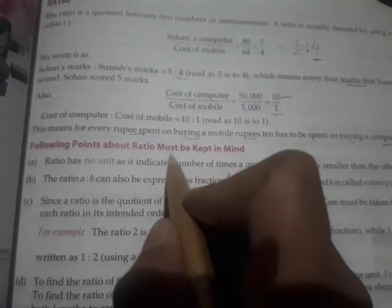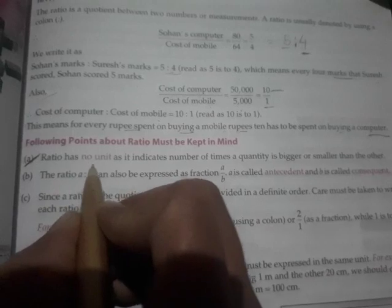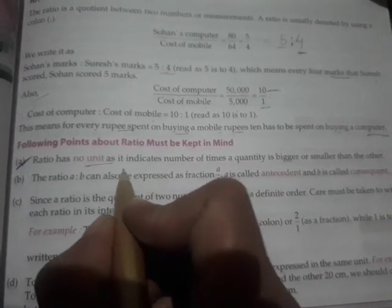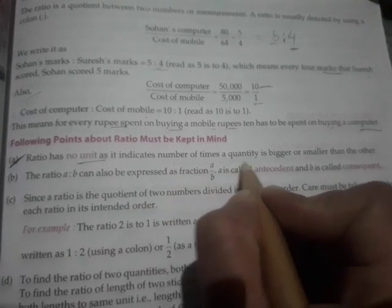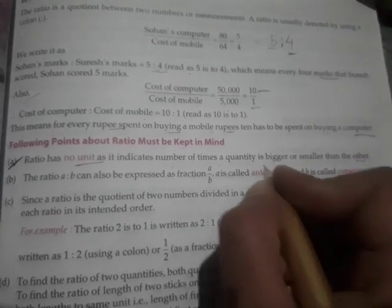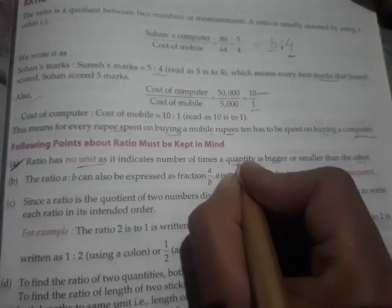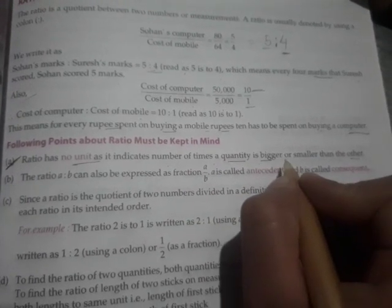Following points about ratio must be kept in mind: Ratio has no unit as it indicates the number of times a quantity is bigger or smaller than the other.